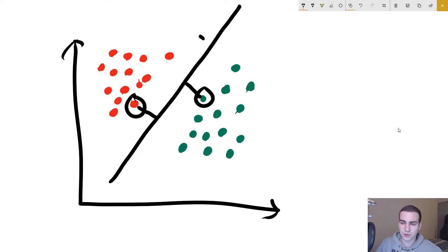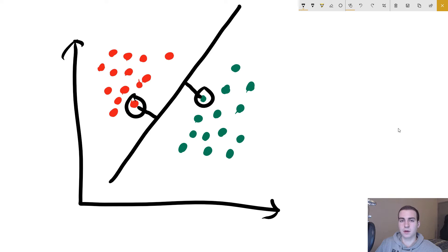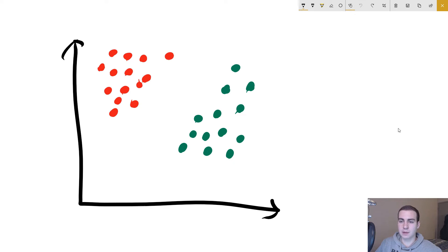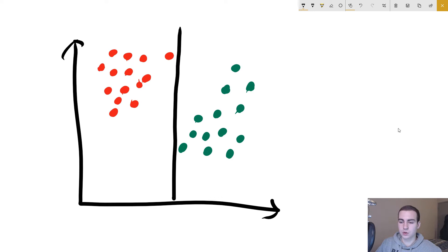If we start tilting the line this way, then obviously this red point is going to be closer and this green point is going to be further away. So these two points are the closest points to the line and the distance between them and the line is the same — that's how we generate a hyperplane. With that information, we can generate an infinite amount of hyperplanes for this dataset. Another hyperplane could look something like this, where the two closest points are this green point and this red point and their distance to the line is the exact same.